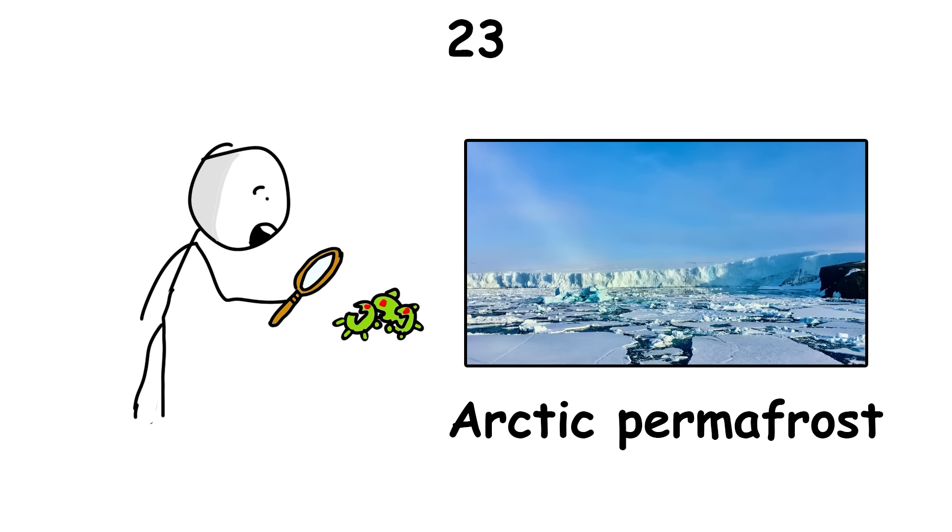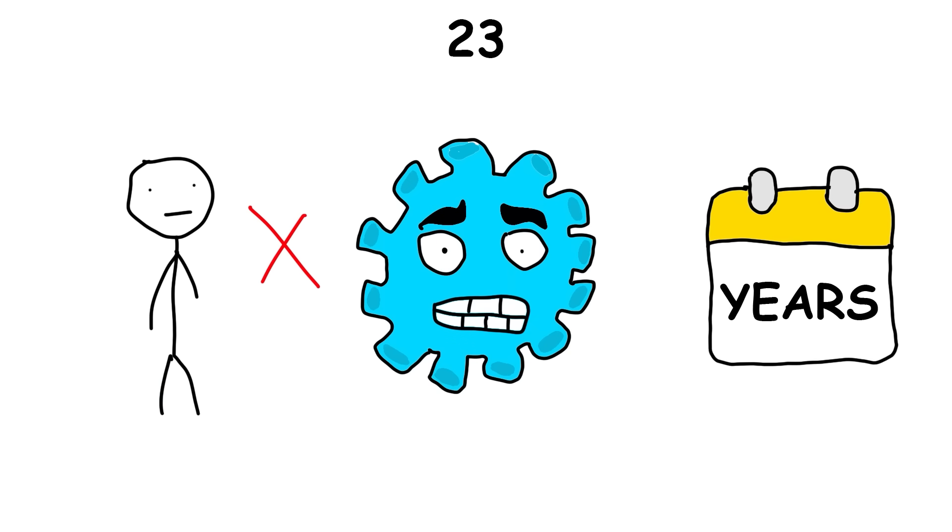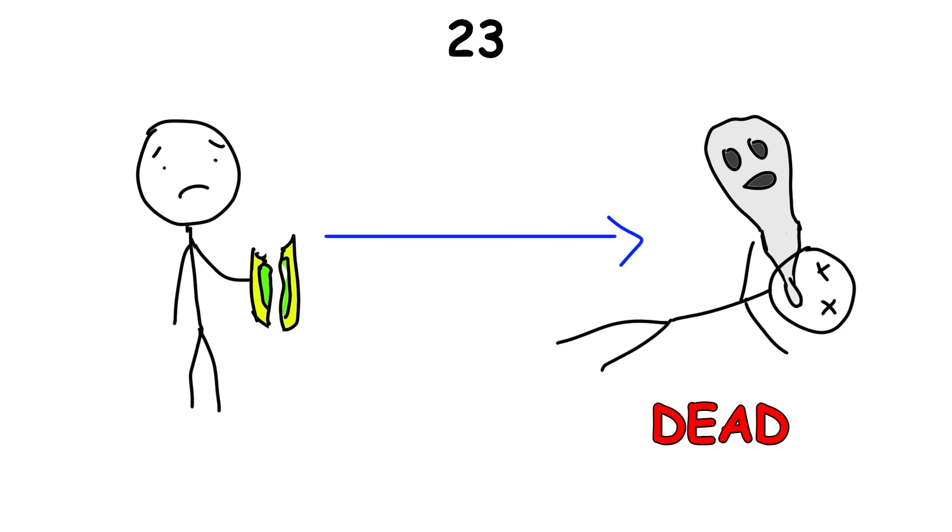Researchers have found viruses in the Arctic permafrost that have remained frozen for tens of thousands of years and have never been in contact with humans. For this exact reason, if the permafrost started melting and released these viruses into the world, we'd have no immunity to it, potentially becoming deadly.